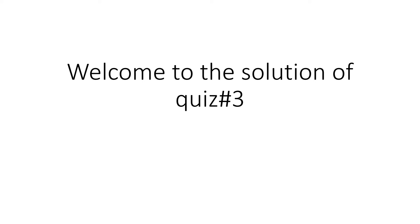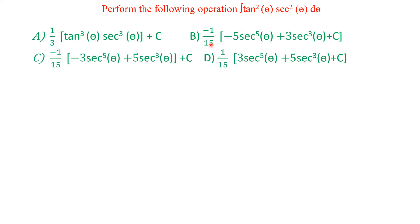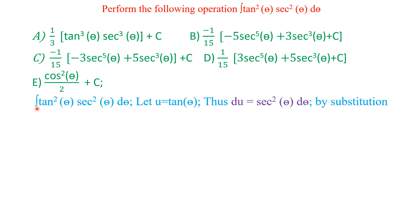Hello and welcome to the solution for quiz number three. The first question asks us to perform the following operation: integration of tan squared theta times sec squared theta d theta. There are five possible answers; our task is to perform the integration and pick the correct answer. Let's take a look at the function: integration of tan squared theta times sec squared theta d theta.